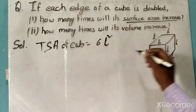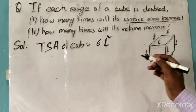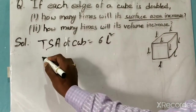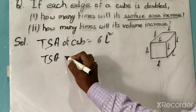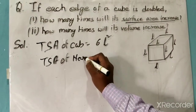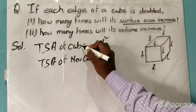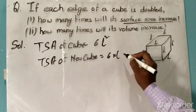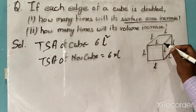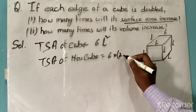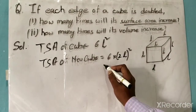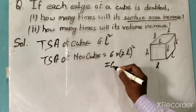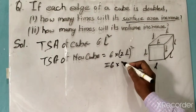Now suppose the edges are doubled. What will be the total surface area of the new cube? The total surface area of the new cube will be equal to 6 into (2L) the whole square.